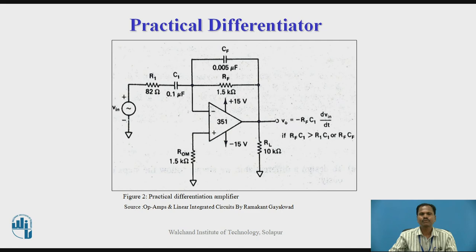Figure 2 shows a practical differentiator circuit. Capacitor CF is connected in parallel with feedback resistor RF, and resistor R1 is connected in series with capacitor C1 at the input side. The op-amp is biased with a dual DC power supply of plus or minus 15 volts, and the output is taken across load resistor RL in parallel with the combination of RF and CF. The output voltage is now a derivative of the input voltage waveform; since the op-amp works in inverting mode, the output is -RF·C1·d(Vin)/dt.